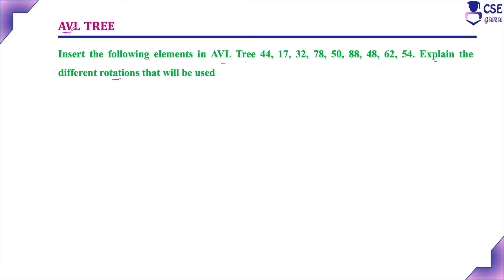First, what do you mean by an AVL tree? An AVL tree is nothing but a height-balanced binary search tree. It should be a binary search tree and also it has to preserve the balance factor. If the balance factor is 0, +1, or -1, the tree is a balanced binary search tree. If the balance factor is +2 or -2 or any other case, the tree is unbalanced, and we have to perform a rotation to convert the unbalanced BST into a balanced one.